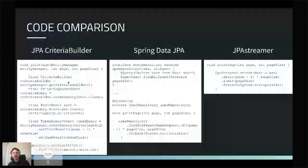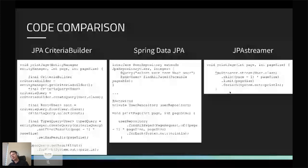This is a comparison between three different ways of writing a query. On the left, we use the JPA criteria builder. In the middle, Spring Data JPA. On the right, JPA Streamer. JPA Streamer is quite compact and small compared to especially the JPA criteria builder. It provides a nice way of keeping your code clean and easy to understand. Code is read far more than it's written — there are examples in literature of more than 100 times more reads than writes by developers — so it's important that code is easy to understand.